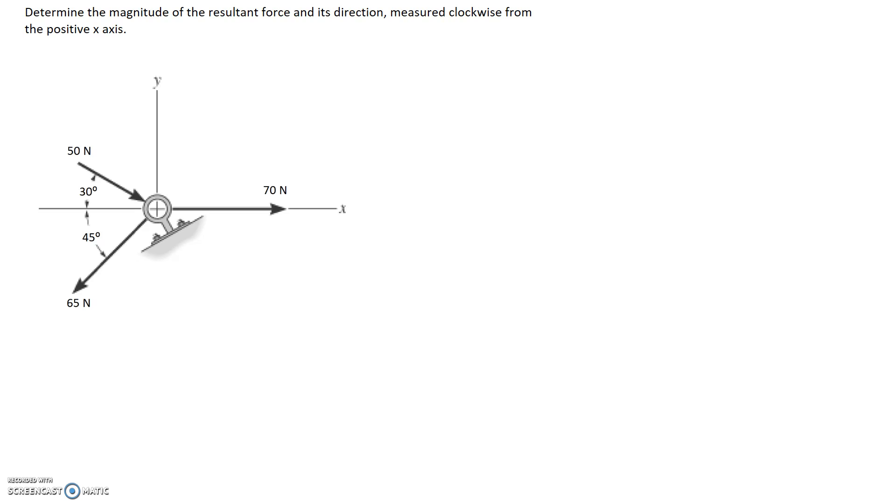Our approach is going to be to figure out the component of our resultant force in the x direction by summing together all the individual parts, and then we're going to do the same thing in the y direction. By summing in the y direction we should get the y component of the resultant force, and once we know these two components we should be able to figure out the overall magnitude and the direction.